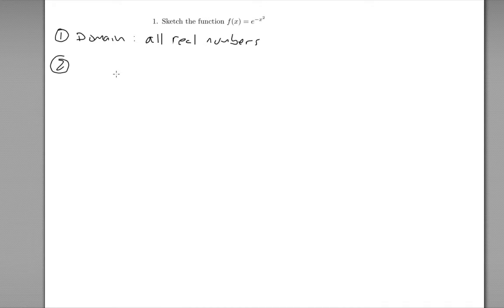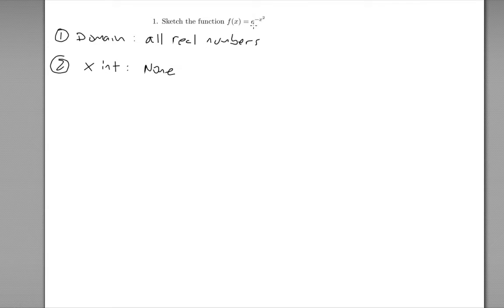Step two: x and y-intercepts. For the x-intercepts, we're looking for where the function equals zero. Because this is an exponential function, we know that exponential functions don't ever cross the x-axis, so there are no x-intercepts. There are no x values you can plug in that will give you zero.